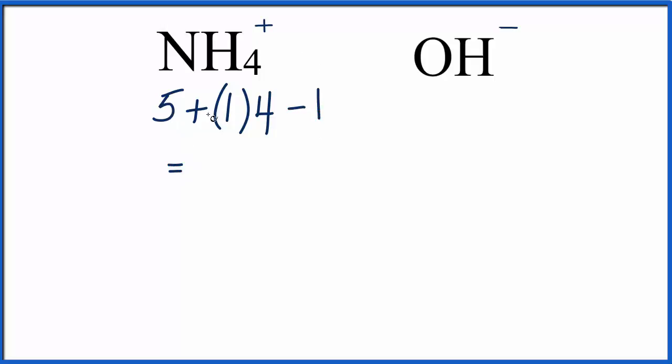And when we do that, we get 5 plus 4 is 9, minus 1 is 8. So we have 8 valence electrons for the NH4 plus Lewis structure.